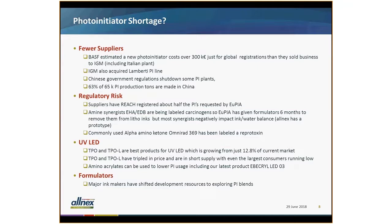TPO and TPOL have a large part of a growing market — about 12.8 percent right now but growing fast — as many retrofits and new printers are using UV LED. One of the raw materials for TPO and TPOL has become in short supply: prices have tripled, and even the largest consumers are having trouble getting it. Amino acrylates can help with surface reactivity, allowing you to lower the amount of photo initiator used. The major ink makers have now shifted their development efforts toward exploring photo initiator blends or finding cheaper or better alternatives.